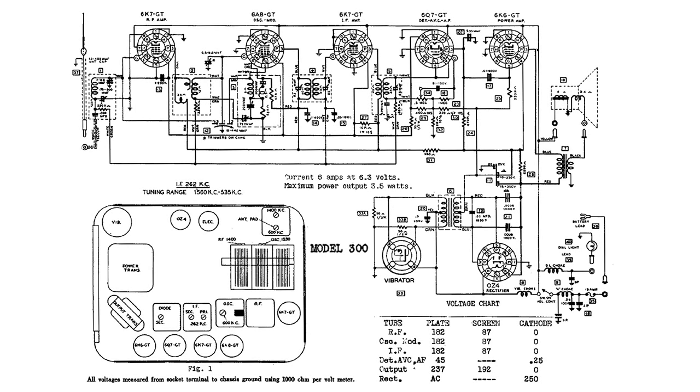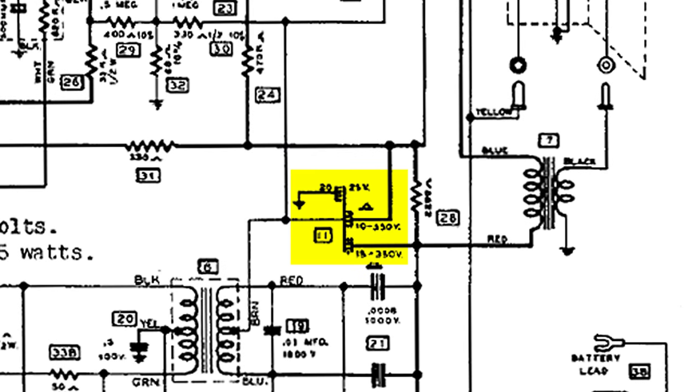This is a Motorola car radio, and several months ago I was asked to explain how the electrical mechanical vibrator circuit produces the B-plus for the tubes. Well recently I got another question about this circuit, and it has to do with these electrolytic capacitors.